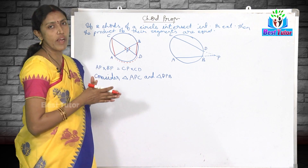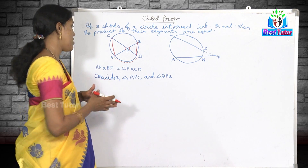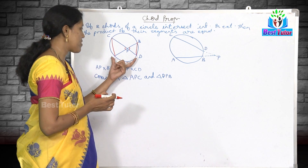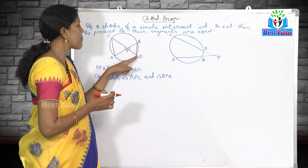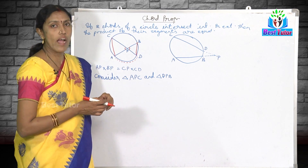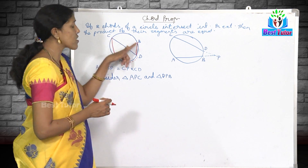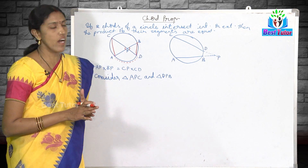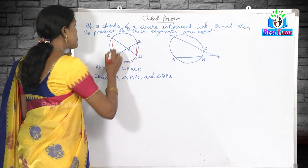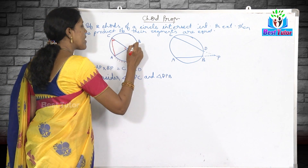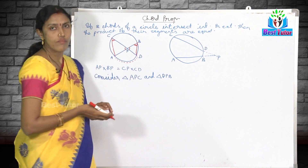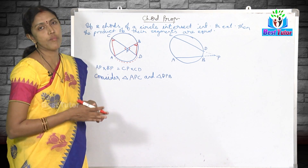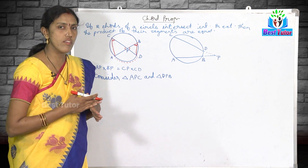Now consider arc AD as the chord. Angle ACD is the angle made by this arc, and angle ABD is also the angle made by this arc. That means these two are angles in the same segment. We have learned that angles in the same segment are equal, so these two angles are equal.